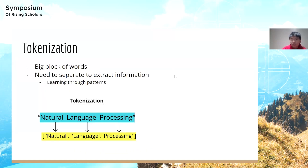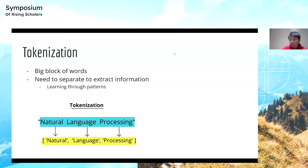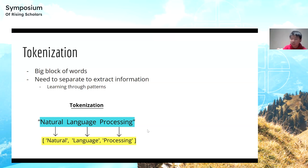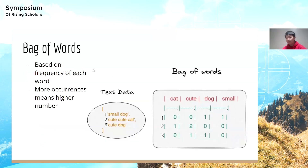Now that we have our datasets, we need to do something called tokenization. The idea is to break up a large block of words into smaller pieces. Machine learning models don't learn well from a huge block because nothing repeats, but if you break text into individual words — for example, 'natural language processing' becomes 'natural, language, processing' — the model can identify how many times each word appears and learn through patterns.